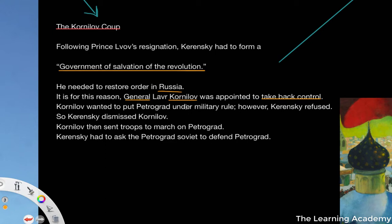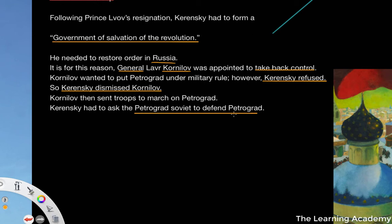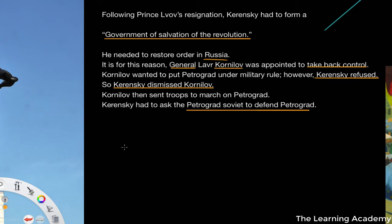Kornilov wanted to put Petrograd under military rule. However, Kerensky refused and dismissed Kornilov. Kornilov then decided to send troops to march on Petrograd, and Kerensky had to ask the Petrograd Soviet to defend it. Kerensky had been in a unique position operating within the dual power of the Provisional Government and the Petrograd Soviet. Kornilov's attempt to march on Petrograd — the Kornilov Coup — was not a good look for the Provisional Government.